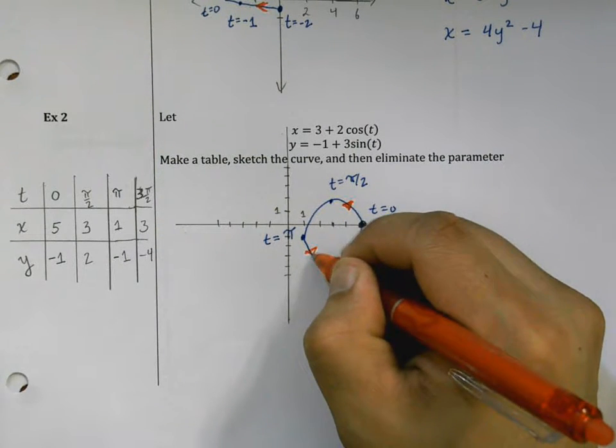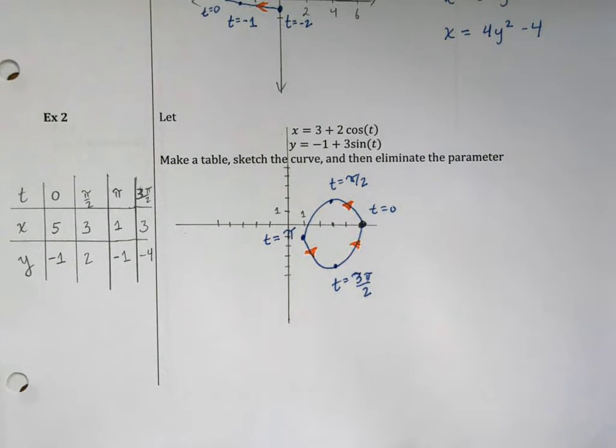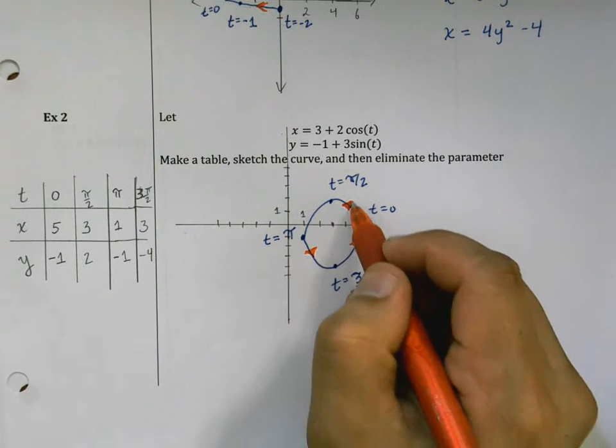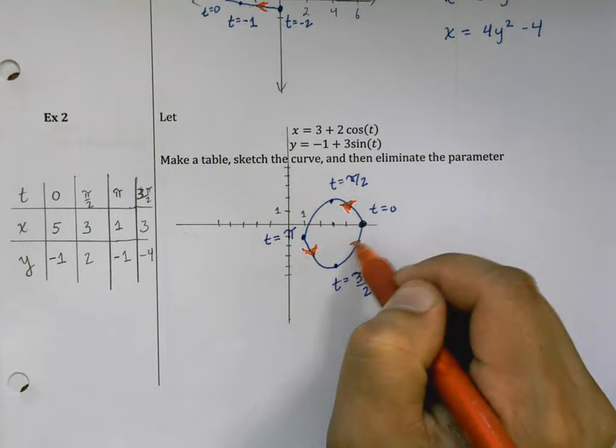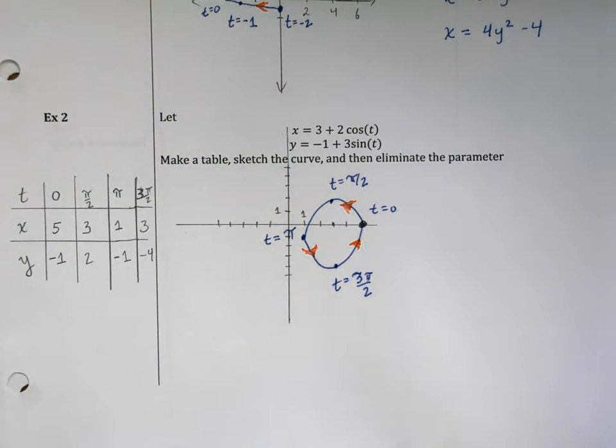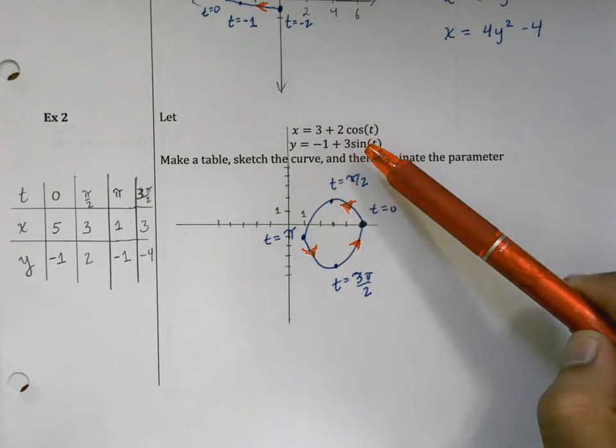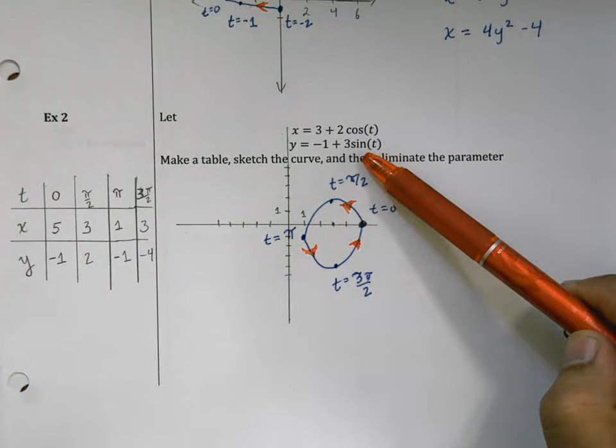The direction of the curve basically spins that way, starting here at t equals zero. Hopefully these arrows are helpful and not confusing, indicating the direction that the function moves in, or that the curve moves.